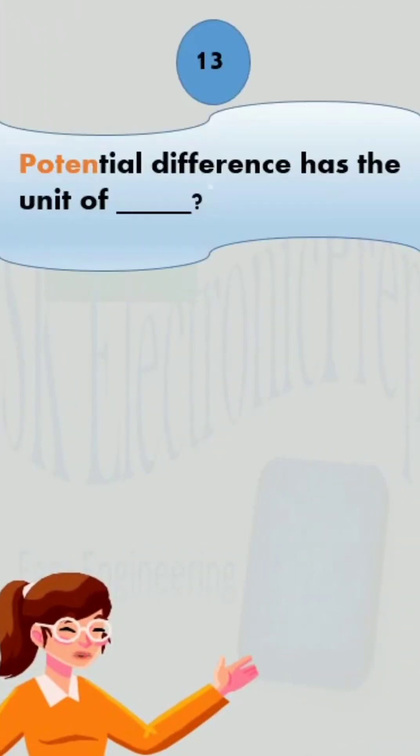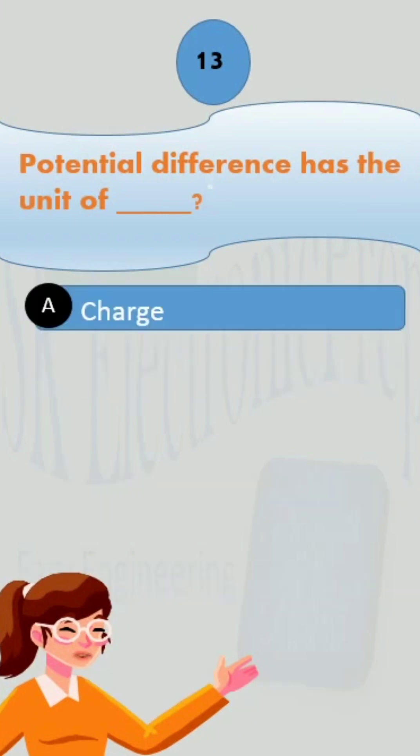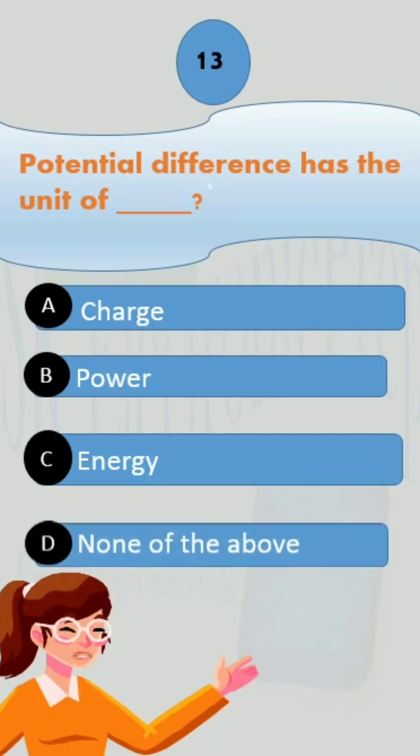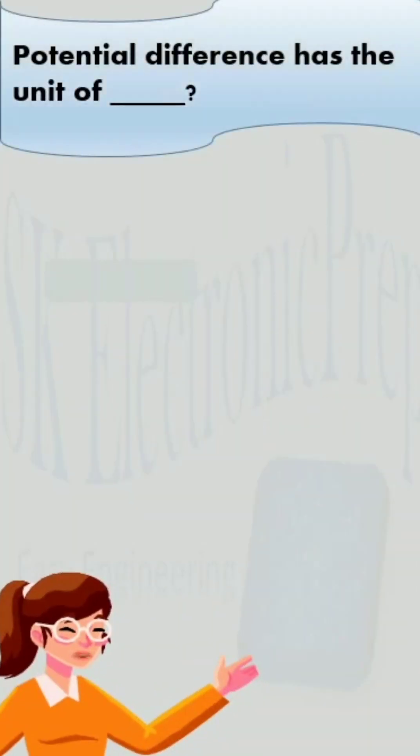Basic physics question number 13: Potential difference has the unit of - Option A: Charge, Option B: Power, Option C: Energy, Option D: None of the above. The commonly known unit of voltage is volt, but this is not in the options, so we have to look for another correct solution.